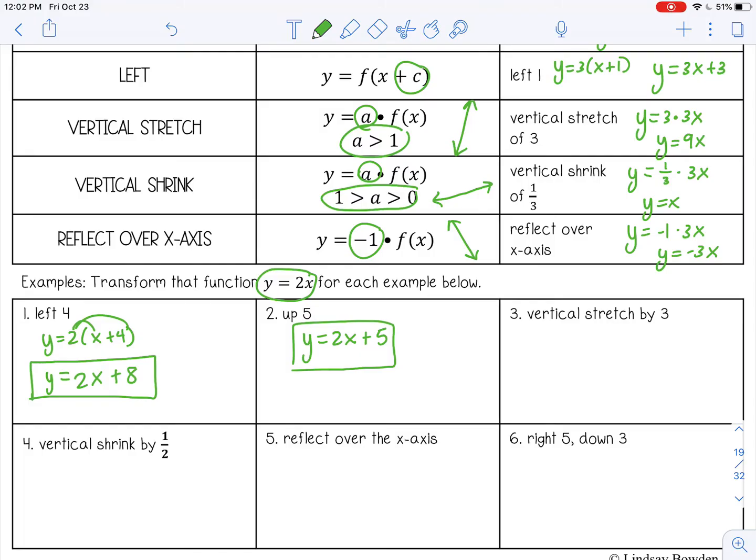Vertical stretch by three, that means I'm going to multiply by three out front. So y equals three times 2x. Remember, this is the function we are transforming, 2x. So that would simplify to 6x.